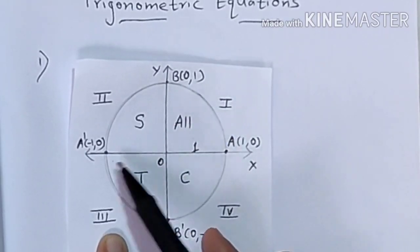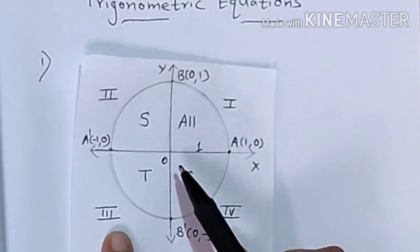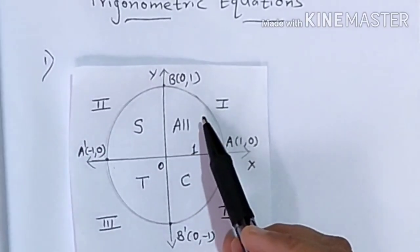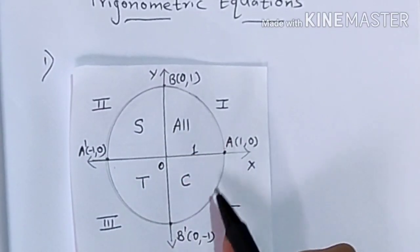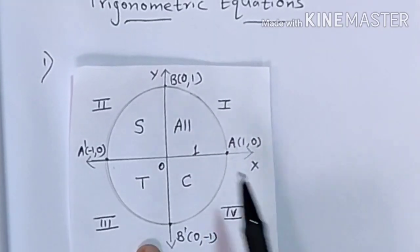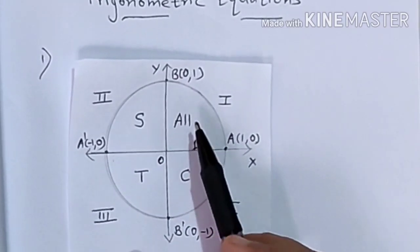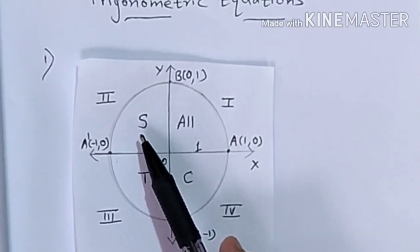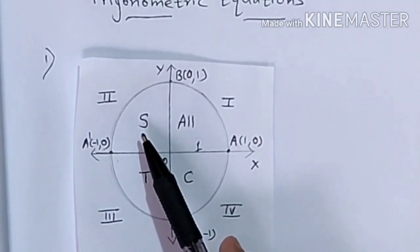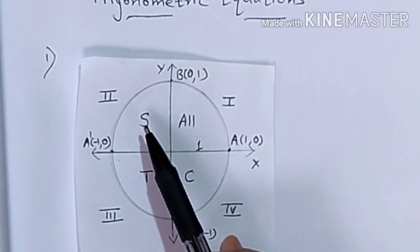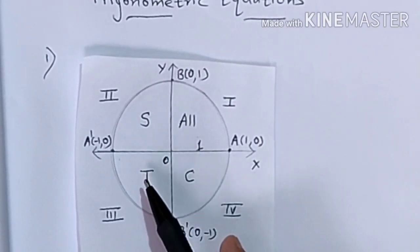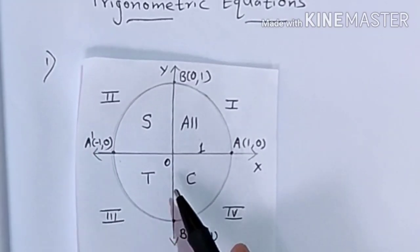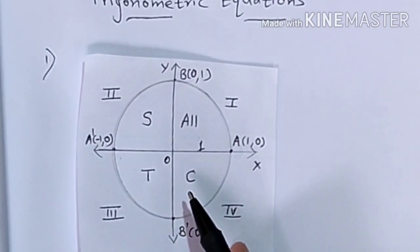The x-axis and y-axis divide the plane into 4 parts called quadrants: 1st, 2nd, 3rd, and 4th quadrant. In the 1st quadrant all trigonometric ratios are positive. In the 2nd quadrant sin (and cosec) is positive. In the 3rd quadrant tan and cot are positive. In the 4th quadrant cos and sec are positive.